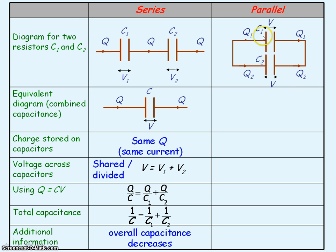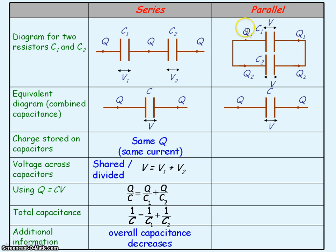If we now connect the two capacitors in parallel, they will both have voltage V across them, but C1 will store charge Q1, and capacitor C2 will store charge Q2. We're going to find an equivalent capacitance C, with voltage V across it and storing total charge Q.